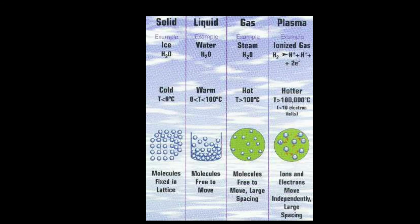Let's compare all the states of matter as per temperature, using H2O as an example. Solid — ice: at zero degrees Celsius or below, H2O is in the form of ice, with molecules fixed in a lattice. Liquid — water: temperature between zero and 100 degrees Celsius. Gas — steam: when temperature exceeds 100 degrees Celsius, water converts into water vapor, with molecules free to move in large spacing. Plasma: when temperature reaches up to 1 lakh degrees Celsius, it becomes ionized gas — a form of plasma — where ions and electrons move independently in large spacing.